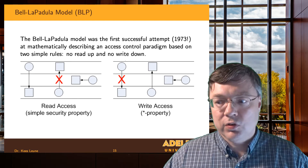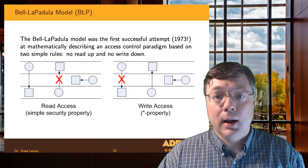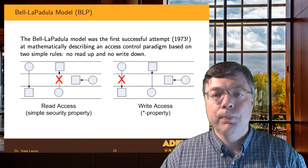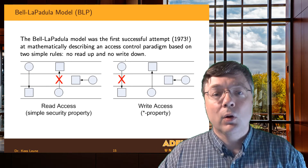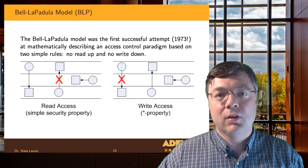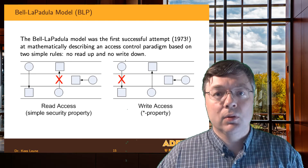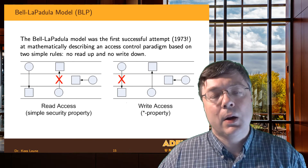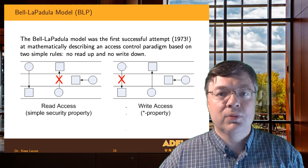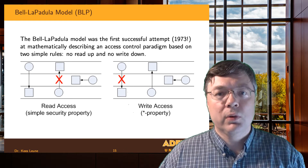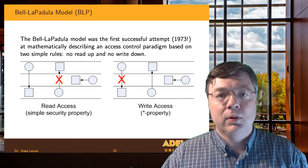The opposite, sometimes called the star property or the no write down property, means that any resource I create or modify will be classified at or above my level. This prevents data leakage — for example, if I had top-secret clearance, I could read a top-secret document and then create a copy reclassified as public, creating a data leakage method. To prevent this, any new or substantially changed resources must be classified at least at my security clearance or above, but not below it.